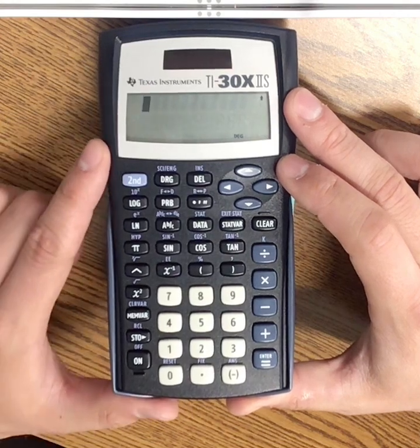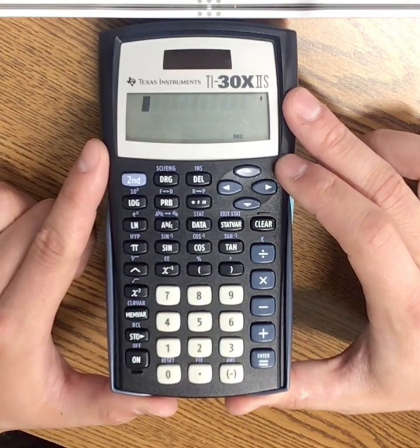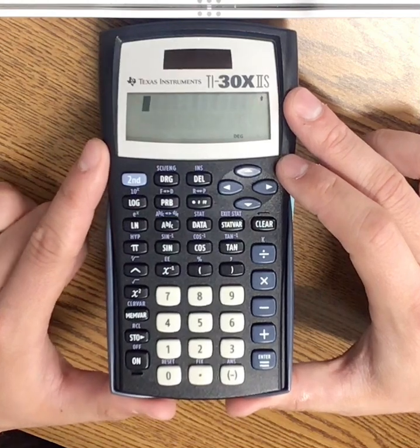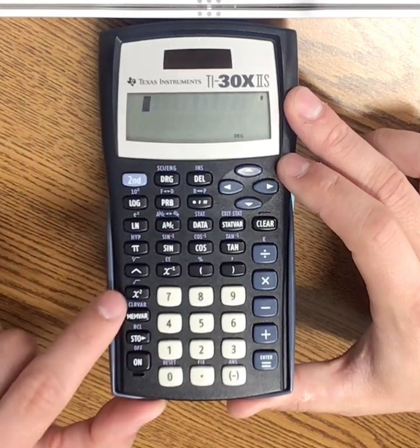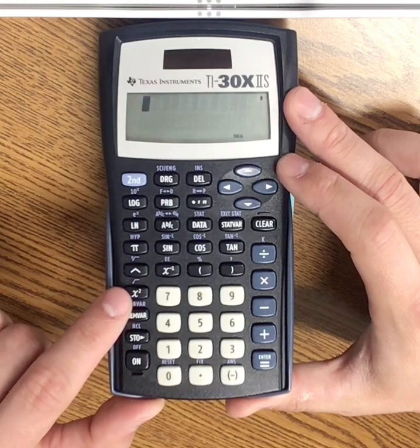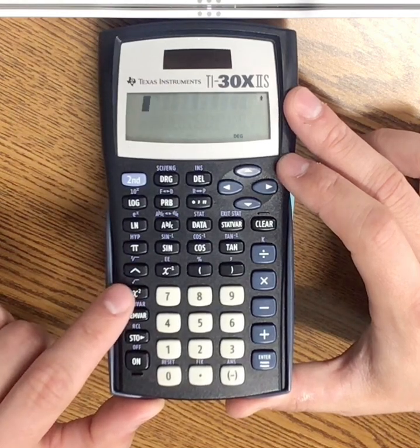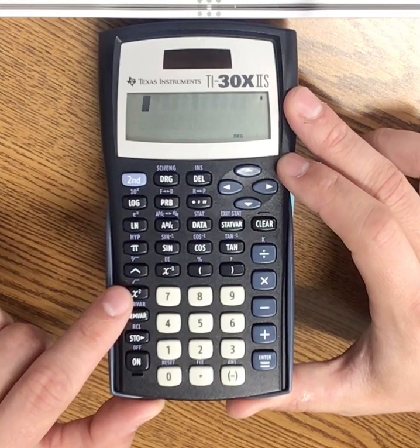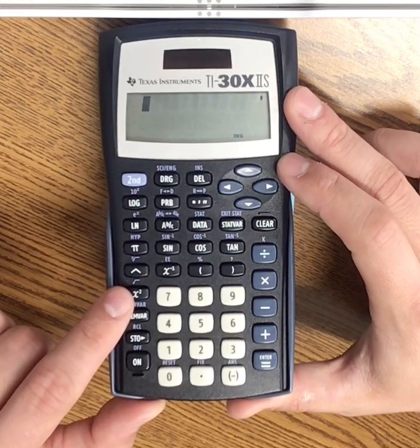For example, if I'm trying to type 7 to the second power, or 7 squared, there's a button down here that has an x and then the little exponent of 2 on it. This button will create an exponent of 2 on any number for the base.